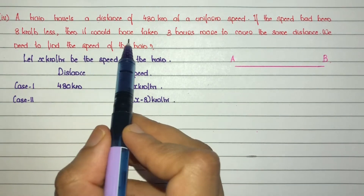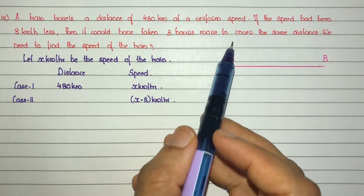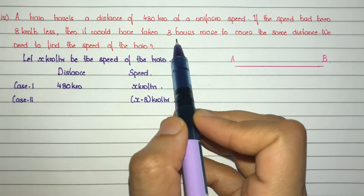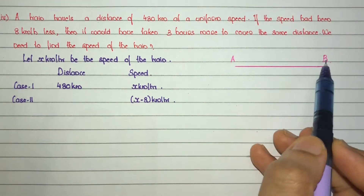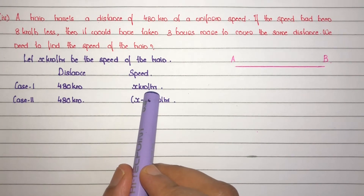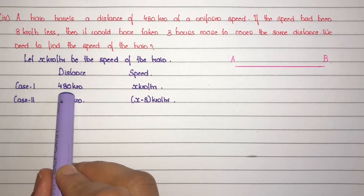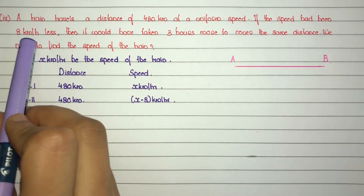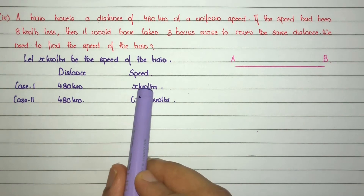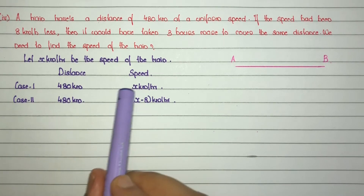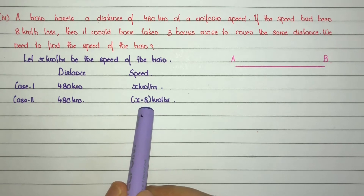Then it would have taken 3 hours more to cover the same distance. The distance is the same in both cases. Case 1 speed is x km per hour. Case 2 speed is 8 km per hour less, so the time taken is 3 hours more.